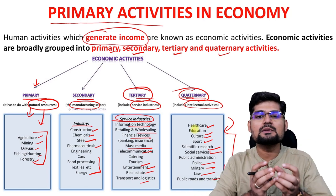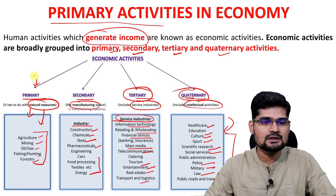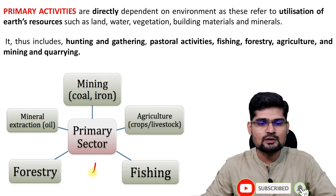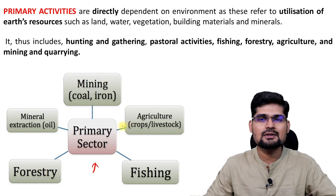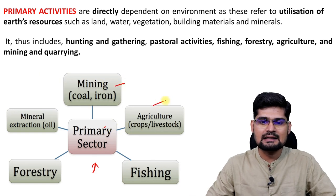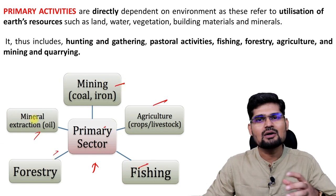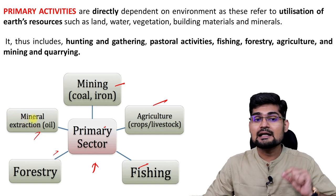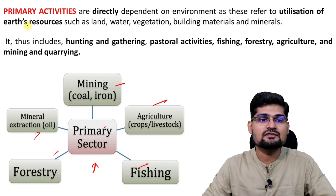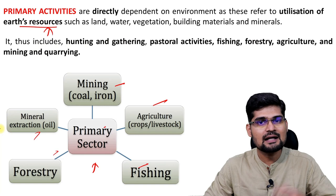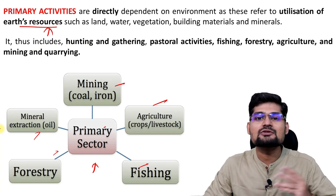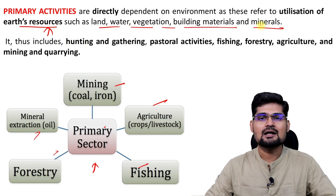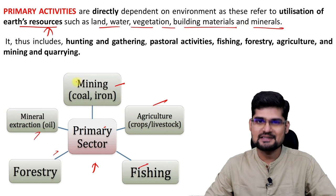The entire economy is built on four pillars, out of which we are going to learn about the first pillar — the primary activity. The primary sector is based on mining, agriculture, fishing, forestry, mineral extraction. It is directly understood as the utilization of earth's natural resources. So land, water, vegetation, building materials and minerals occupy the major attributes of primary activities in our economy.